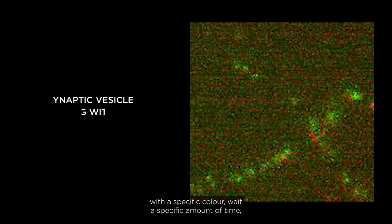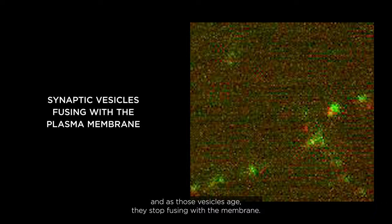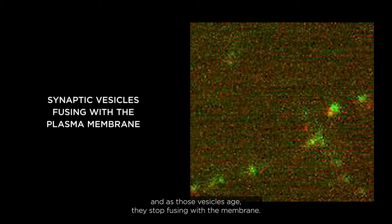What we were able to do is label vesicles as they fuse with the plasma membrane with a specific color, wait a specific amount of time, and as those vesicles age they stop fusing with the membrane. So we now had this completely isolated labeled population of vesicles.